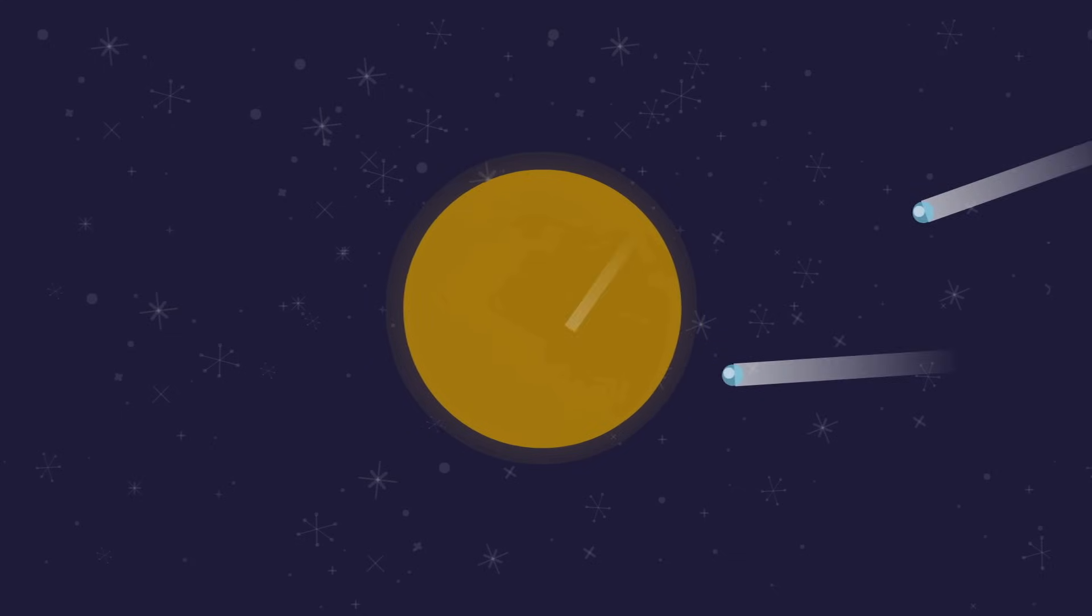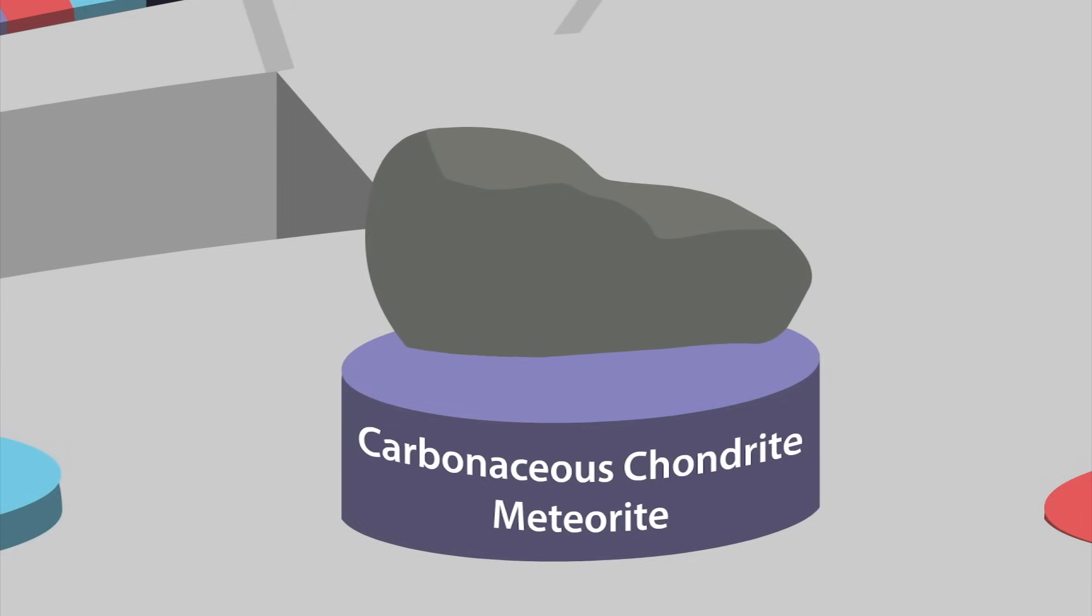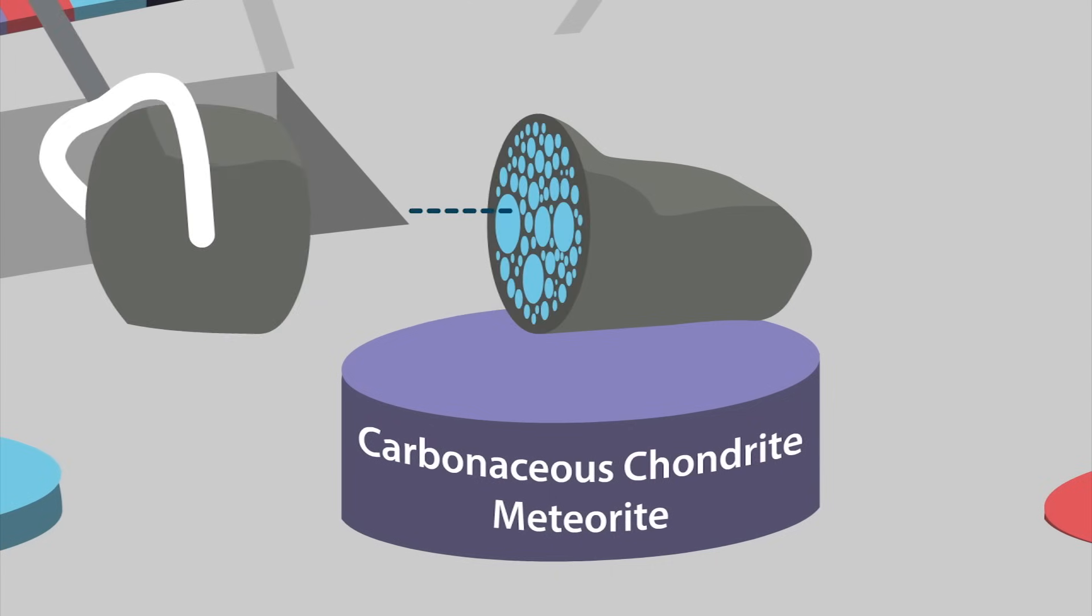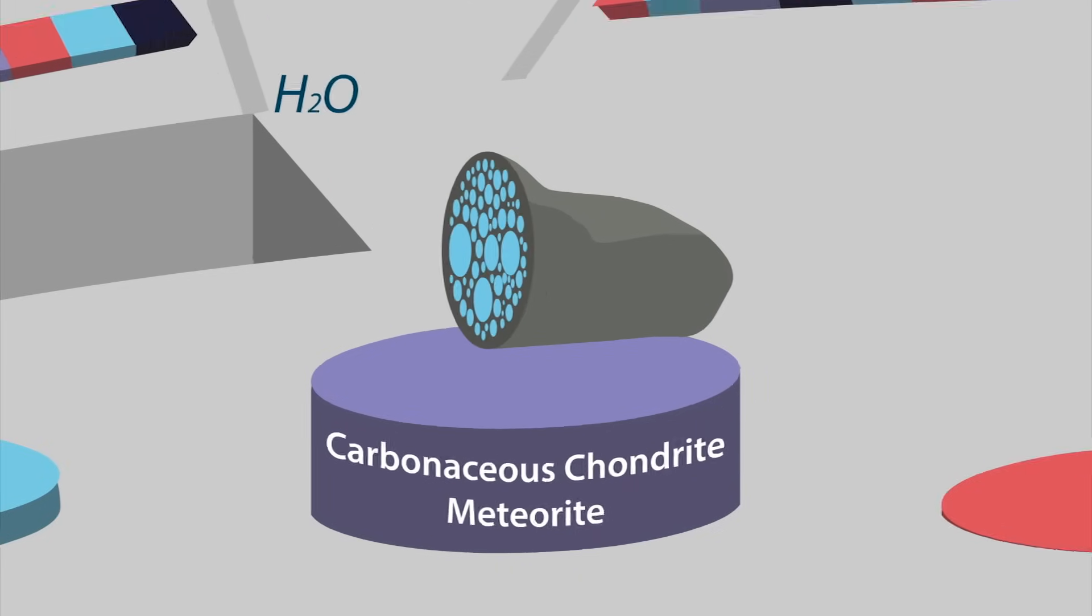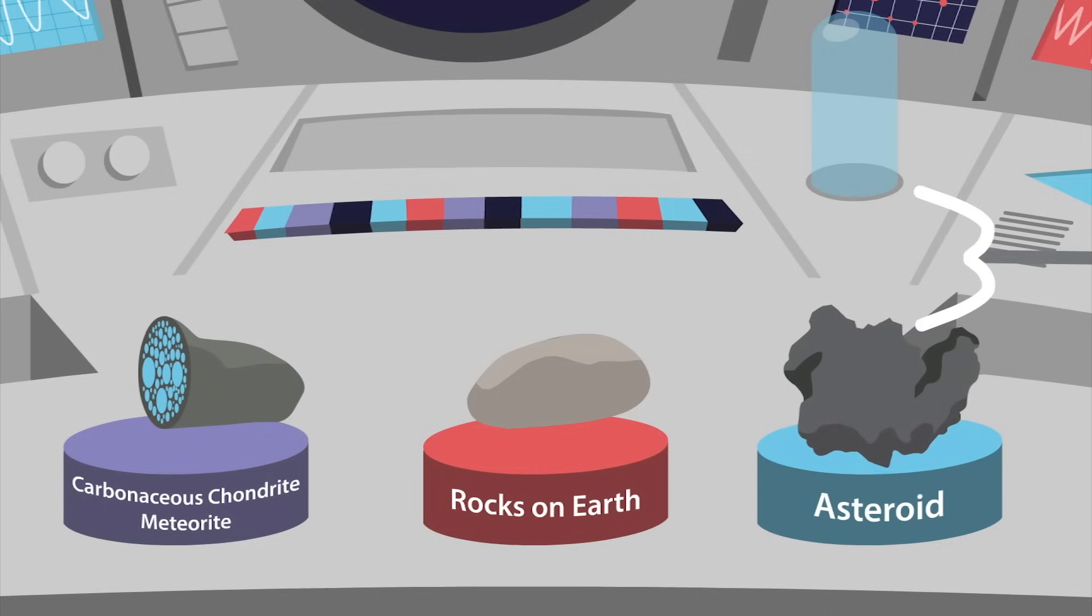Recent research has challenged this theory. In examining carbonaceous chondrite meteorites that formed shortly after the birth of our solar system, scientists have found that not only did they contain water, but their mineral chemical composition matched rocks on Earth and samples from an asteroid that formed at the same time as our planet.